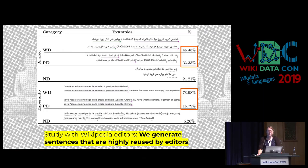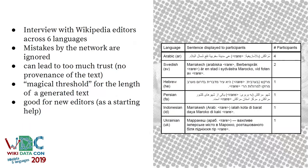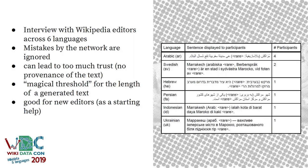Then we did a study with Wikipedia editors, because the article placeholder is just a starting point for people to start editing. We tried to measure how much of the sentences they would reuse — how much is useful for them. There's a high number of reused sentences, especially in Esperanto when tested with editors. Finally, we did qualitative interviews with Wikipedia editors across six languages, about 10 people, to understand the human perspective on those generated sentences.